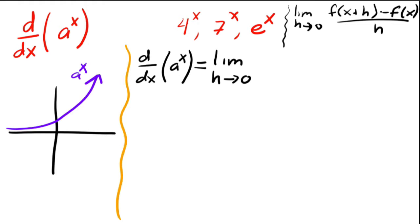Okay, so then what I'm going to have is the limit as h approaches zero of a to the x plus h minus a to the x over h. Okay, so if you look at this, if I obviously plug in zero, I get zero over zero, which is an indeterminate form.